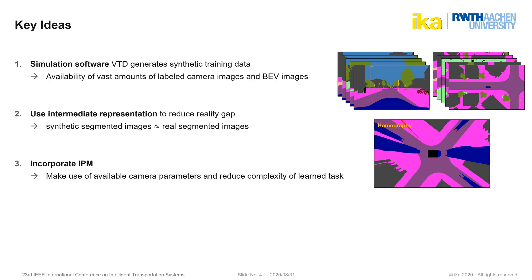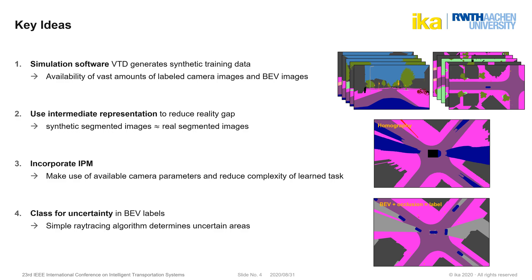When deep learning is used, classical approaches are often completely discarded, even though they contain valuable information. IPM, for example, can compute a so-called homography image which is already quite similar to our desired output. IPM makes use of information on the camera's intrinsic and extrinsic parameters, which wouldn't be explicitly available if we naively trained our neural network end-to-end. By incorporating IPM, we reduce the complexity of the task our neural network has to perform. Lastly, we introduce an additional class for areas not visible in the camera images, using a simple ray tracing algorithm to determine these uncertain areas.